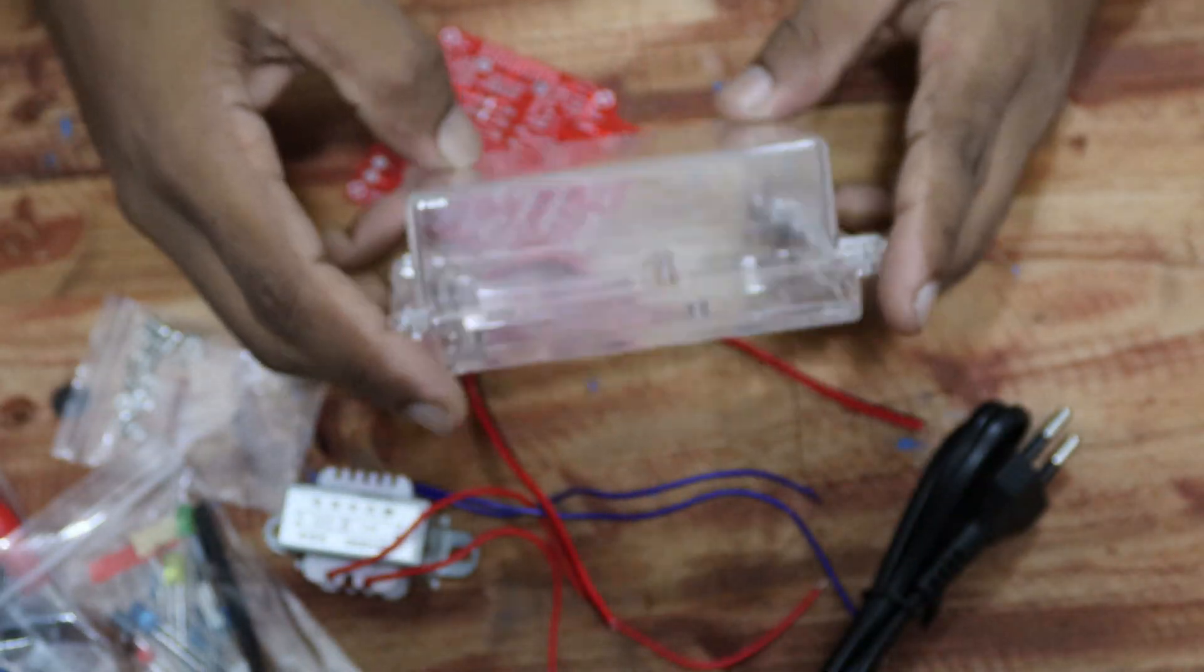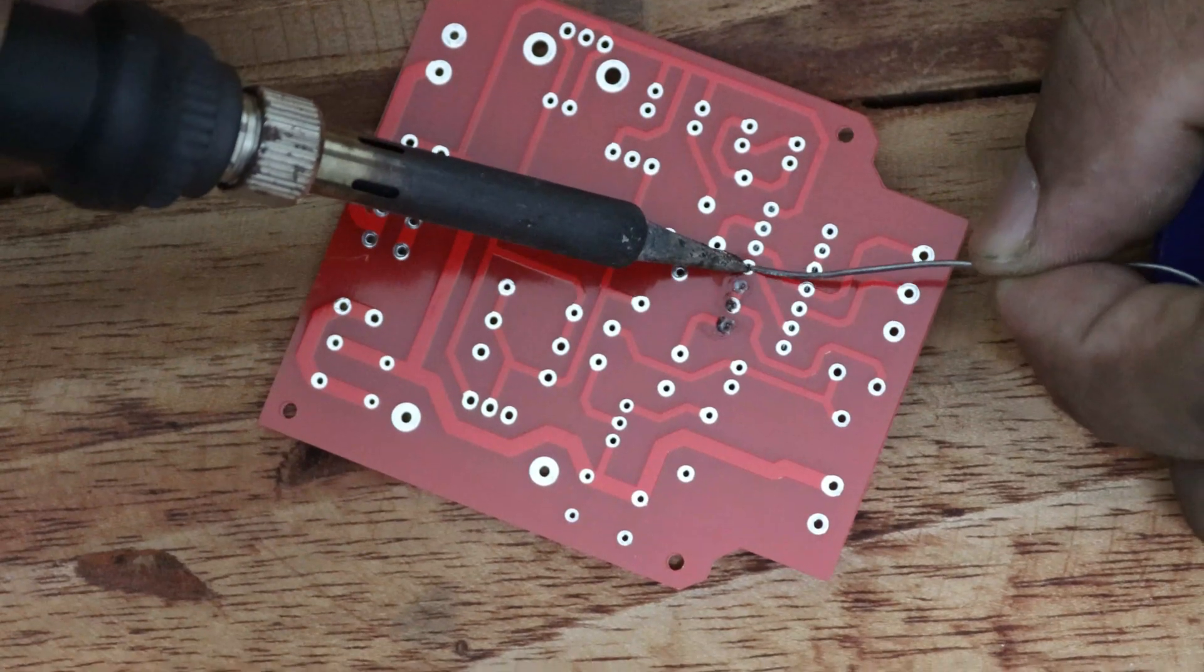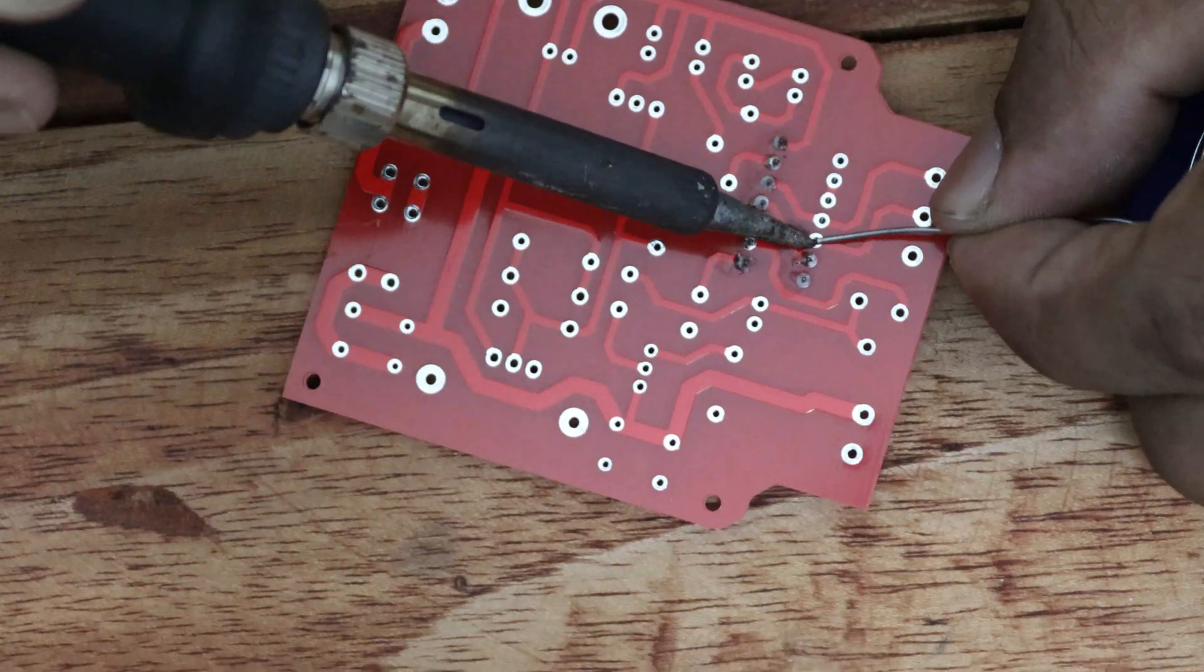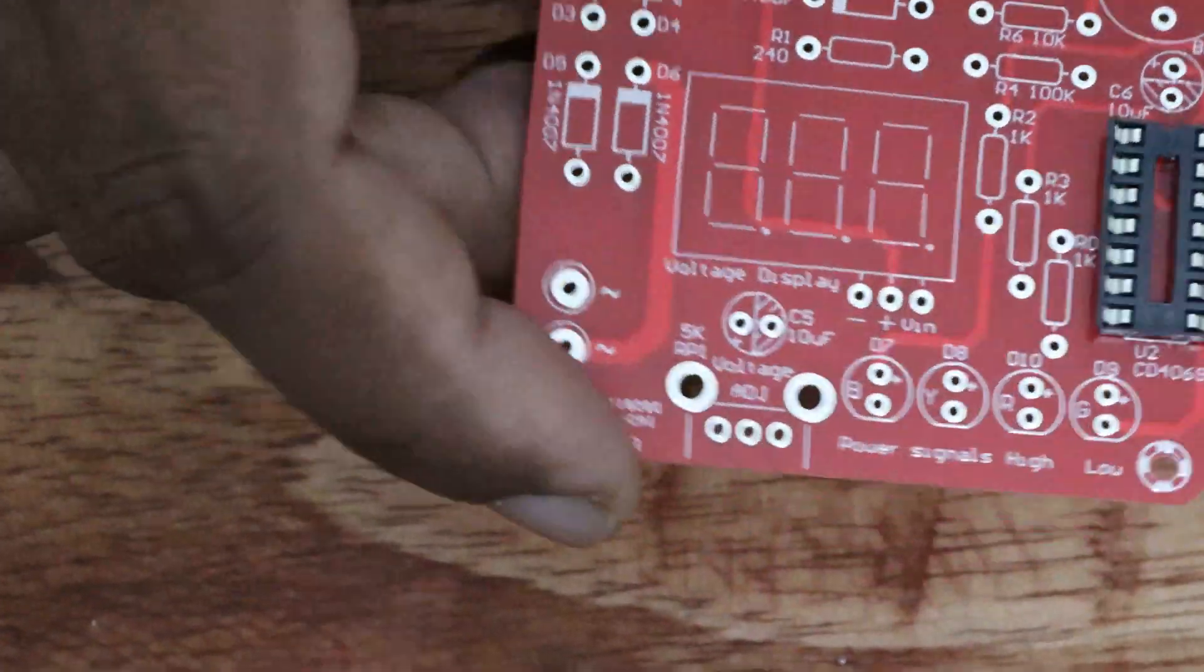Shall we start soldering? First I soldered the IC socket. It will help to protect the IC. Next, the preset, diodes, resistors and capacitors.